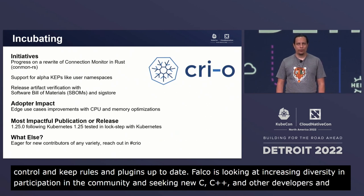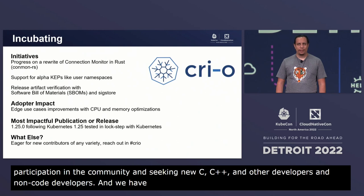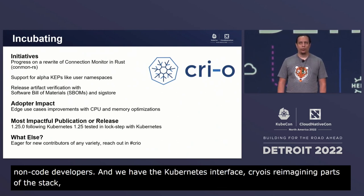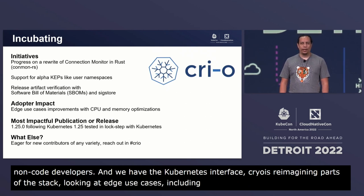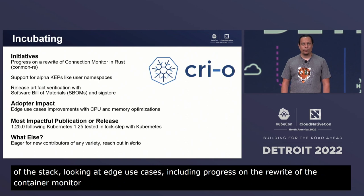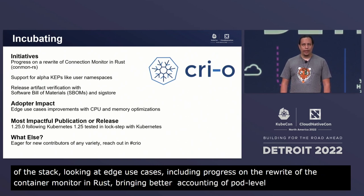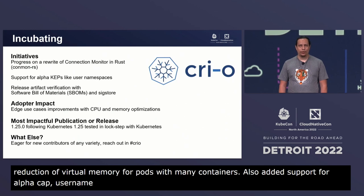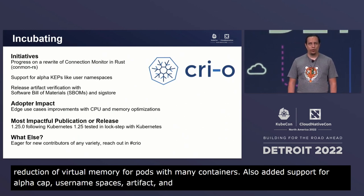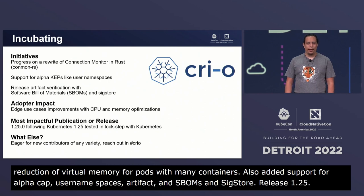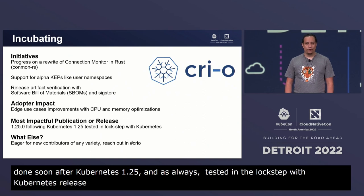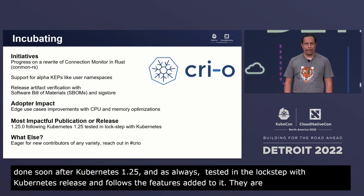CRI-O is an OCI-compliant implementation of the Kubernetes Container Runtime Interface, strictly built for Kubernetes. CRI-O is reimagining pieces of its stack to be better compatible with edge use cases, with recent initiatives including progress on a rewrite of its container monitor in Rust, bringing better accounting of pod-level resources and a reduction of virtual memory for pods with many containers. It has also added support for alpha KEPs such as user namespaces, checkpoint and restore, and release artifact verification with SBOMs and sigstore. Release 1.25.0 was done soon after Kubernetes 1.25, tested in lockstep with Kubernetes releases. CRI-O is eager for new contributors of any variety — reach out on the CRI-O Slack channel.